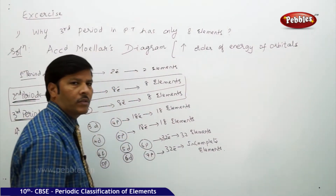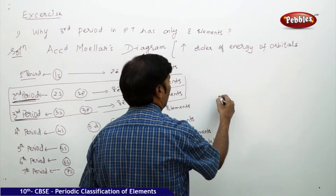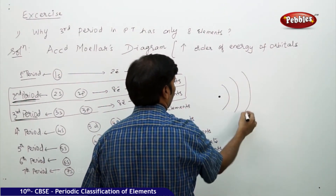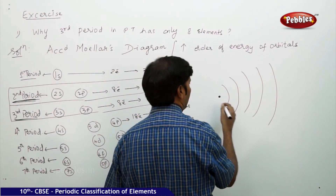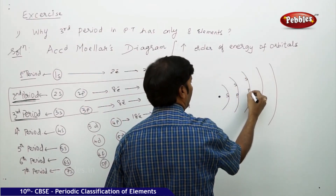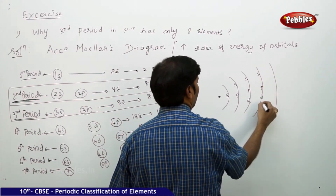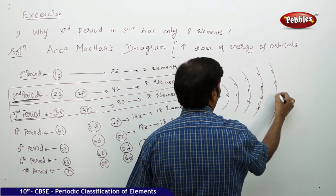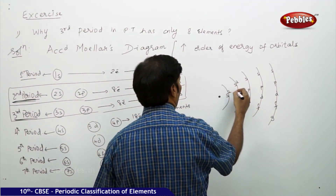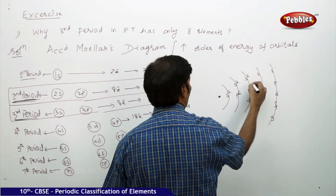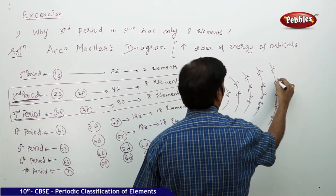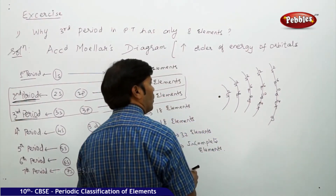If you look at the orbital picture of an element, you have the nucleus, then the first shell, second shell, third shell, fourth shell, fifth shell, and so on. The first shell contains only the s orbital, the second contains s and p, the third contains s, p, and d, and the fourth contains s, p, d, and f. That means the s orbital accommodates 2 electrons, p accommodates 6, d accommodates 10, and f accommodates 14.